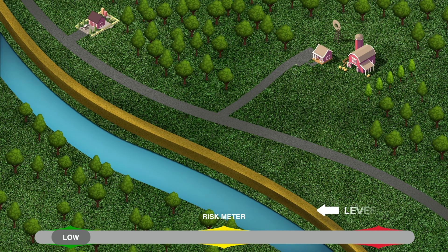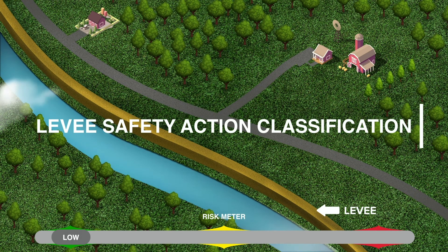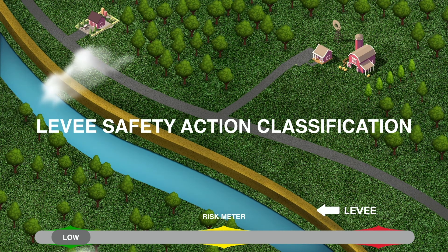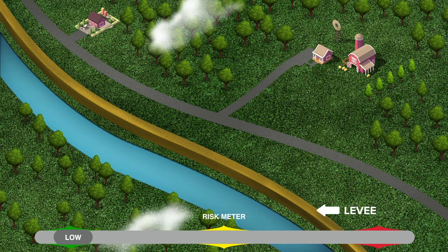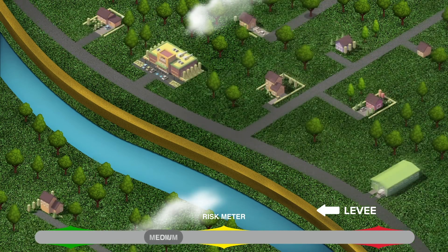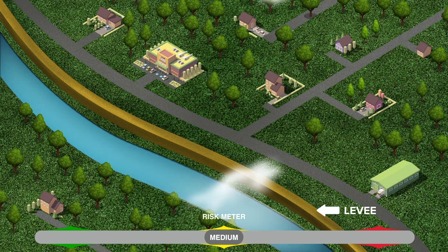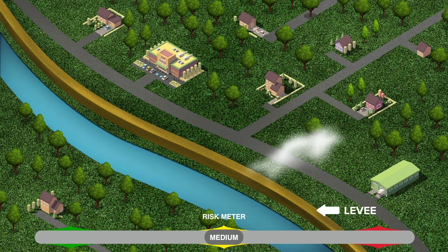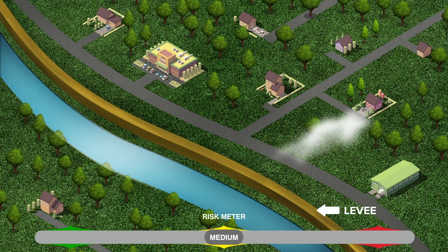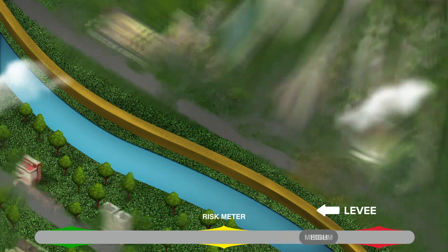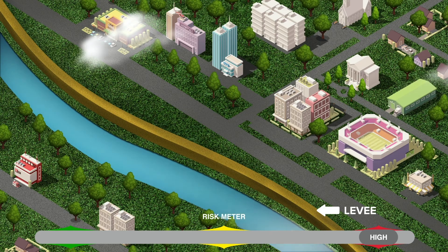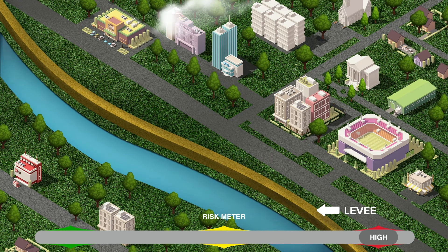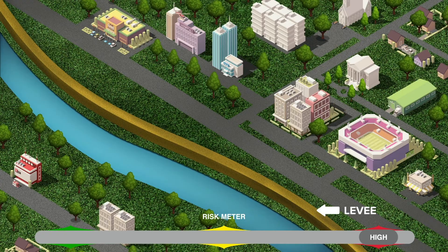One of these tools is called the Levy Safety Action Classification, or LSAC. This classification system helps the U.S. Army Corps of Engineers to better inform local levy sponsors and residents of the residual flood risks that remain despite the presence of levies in their communities.